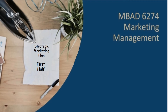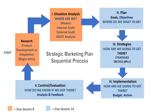This is a guide for the first half of the Strategic Marketing Plan. It includes both a situation analysis and a SWOT analysis, which is indicated in the orange step, Roman numeral 1. It addresses the question: where are we now?